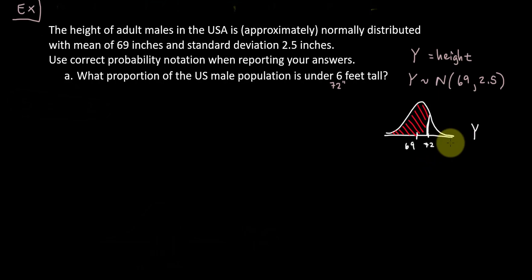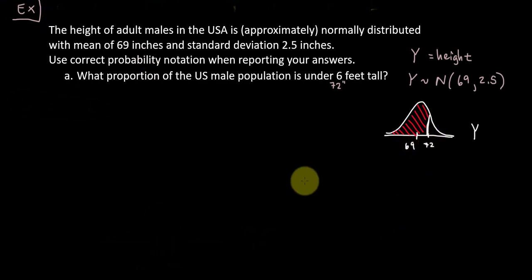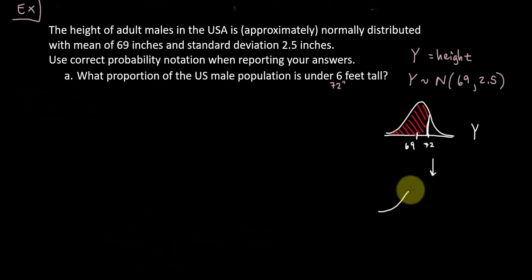I'm going to draw a normal distribution in Y. The mean is 69 inches. This question is about the proportion of the population under 72 inches, so I shade the region to the left of 72. Just looking at this image, I can see that more than half is shaded, so I know my answer better be more than 0.5. What we're going to do is transform 72 inches into a Z-score.